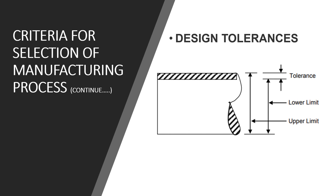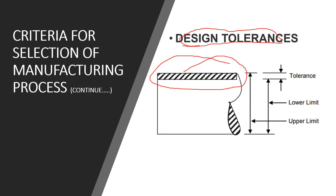Another criterion affecting the selection of manufacturing processes is design tolerances. Tolerances are provided on the surface of the part and defined by the designer. It is very important to manufacture a product within the given permissible tolerance limit. In hot forging, it is hard to maintain tolerance limits compared to machining, where it is easier to achieve given dimensions. It is essential to manufacture parts within tolerance limits when assembling different parts to create one product.